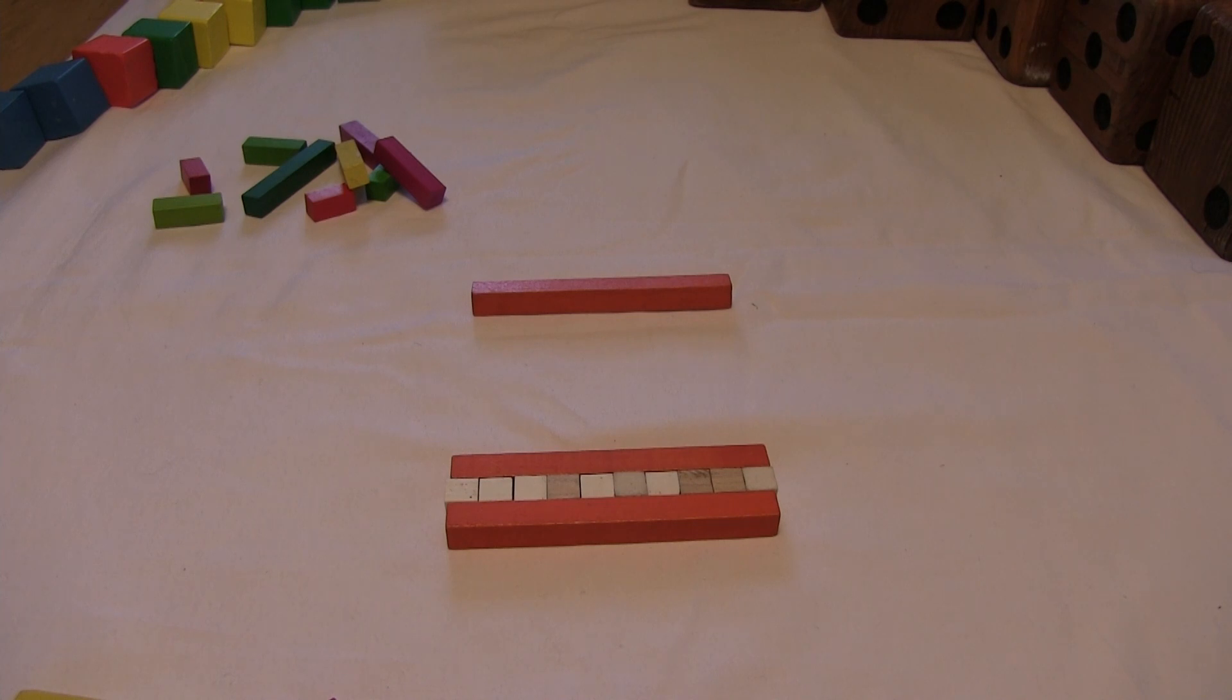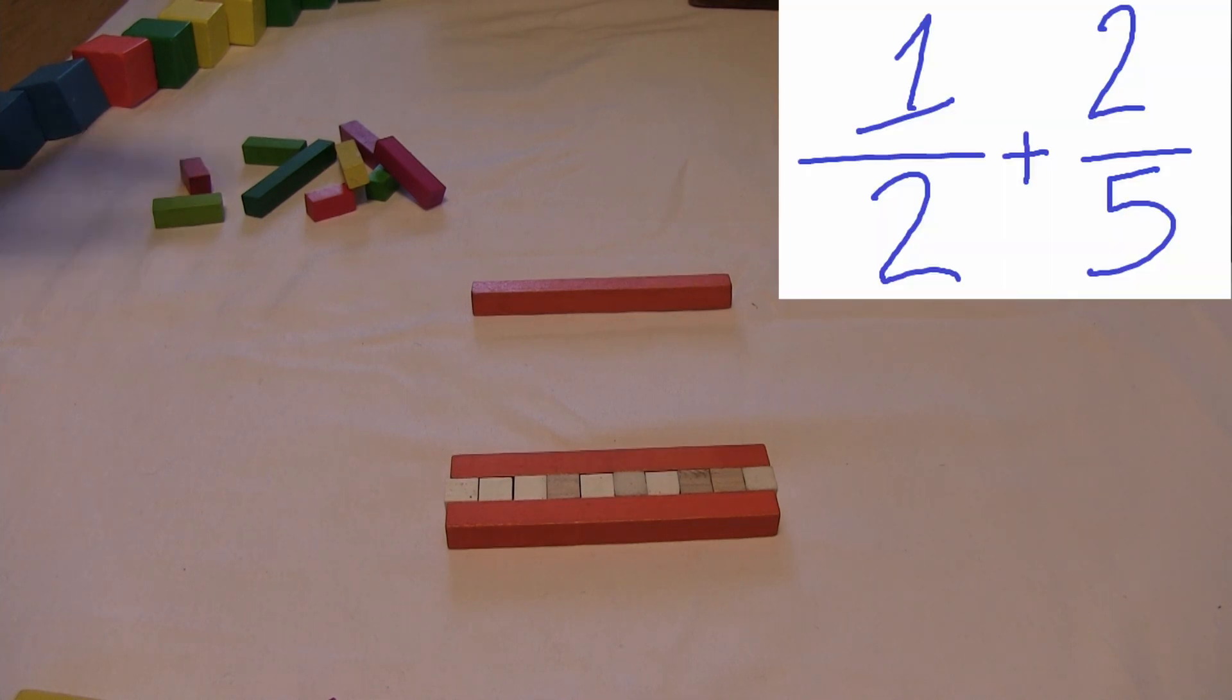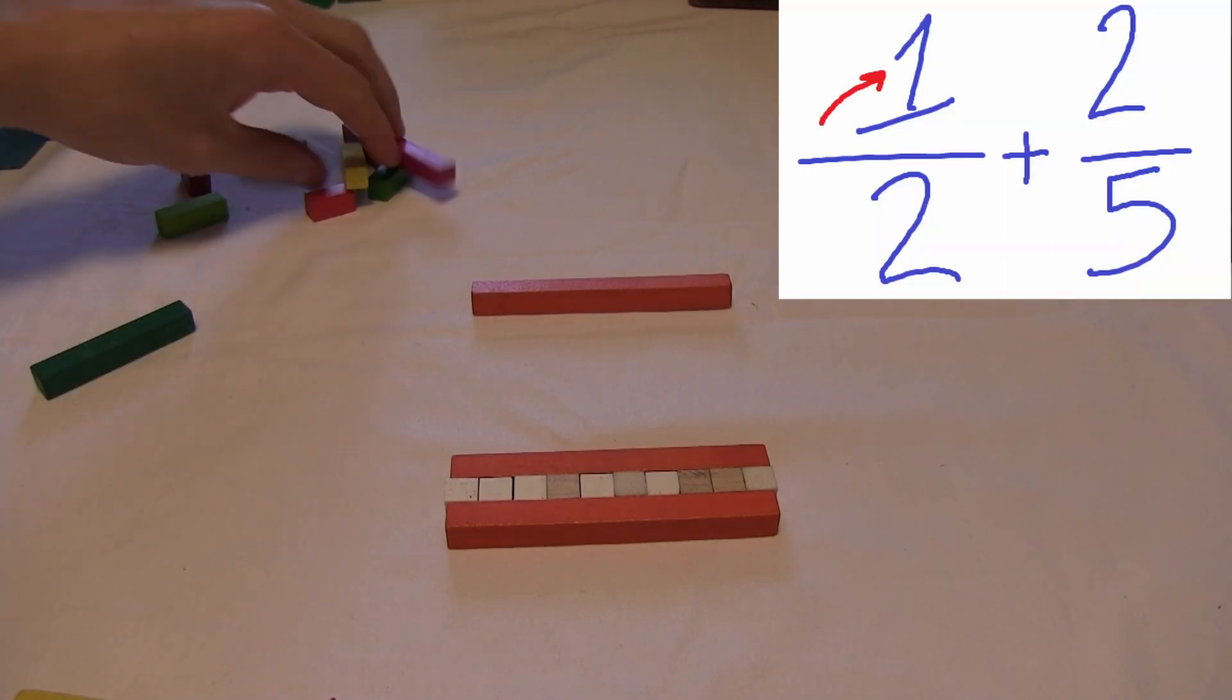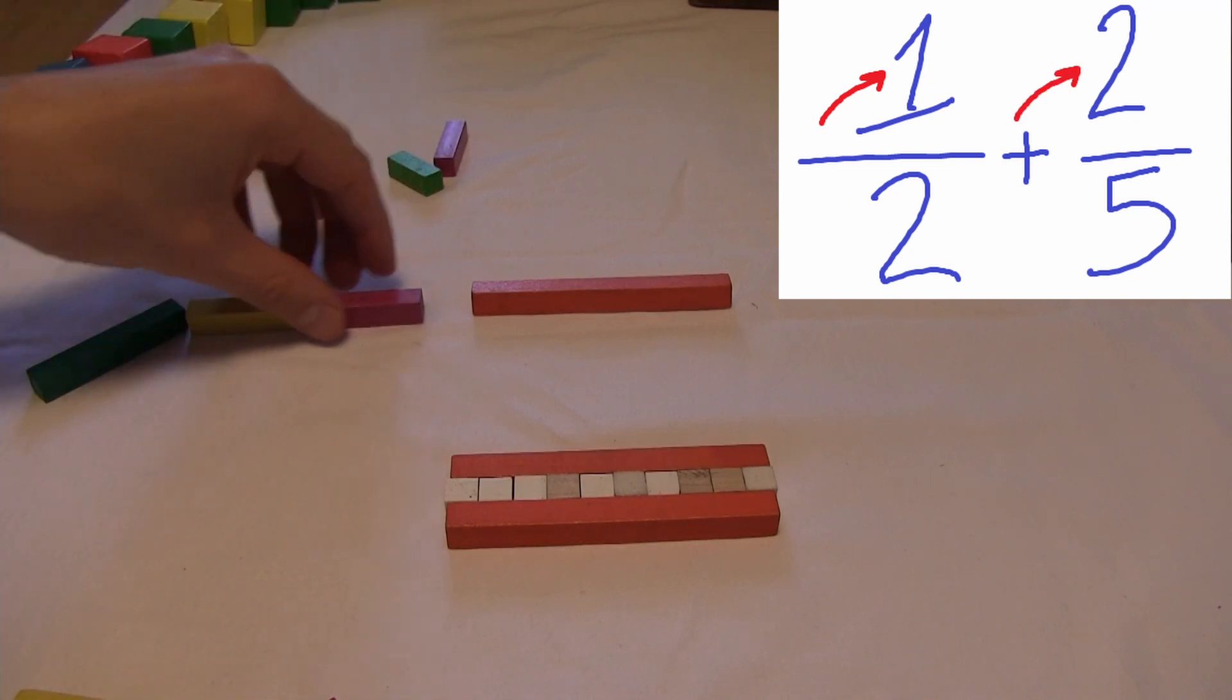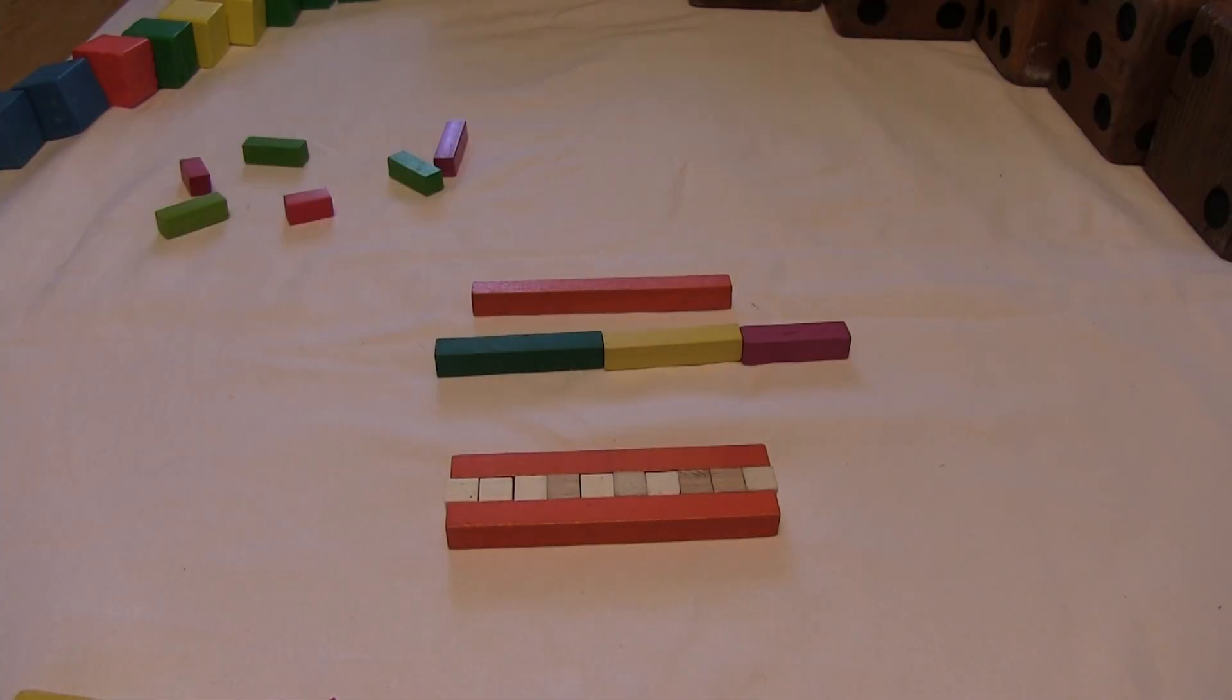Let's say I've got the fraction one-half added to two-fifths. Well, I could just grab one of these and two of these and stick them together and let's see how we do. Does that give me the correct answer? Probably not.